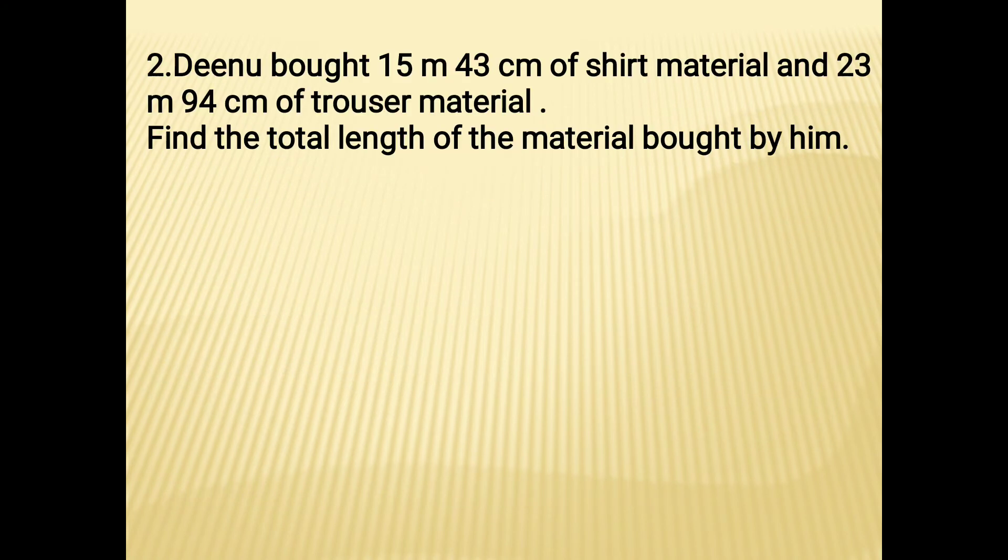Now see the second sum. Deenu bought 15m 43cm of shirt material and 23m 94cm of trouser material. Find the total length of the material bought by him.